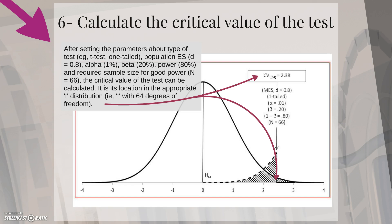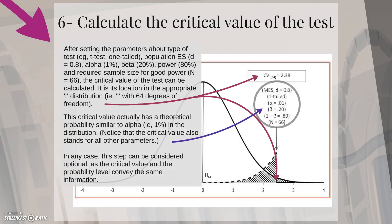It is its location in the appropriate t-distribution, which in our case is a t-distribution with 64 degrees of freedom. This critical value actually has a theoretical probability similar to alpha, that is 1%, in the distribution. Notice also that the critical value stands for all other parameters.